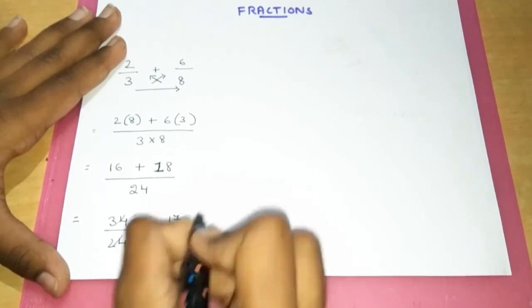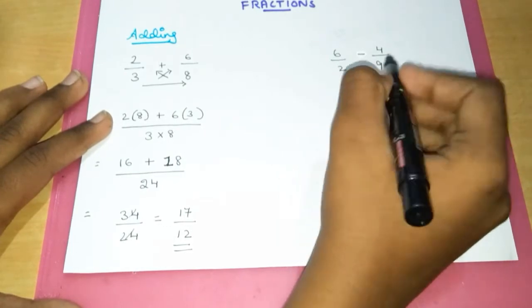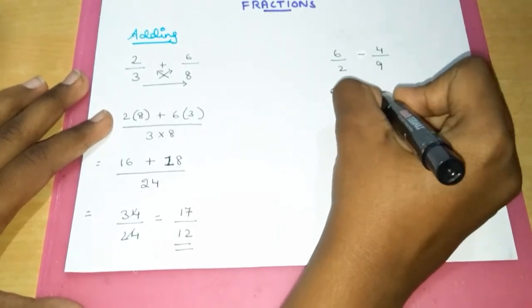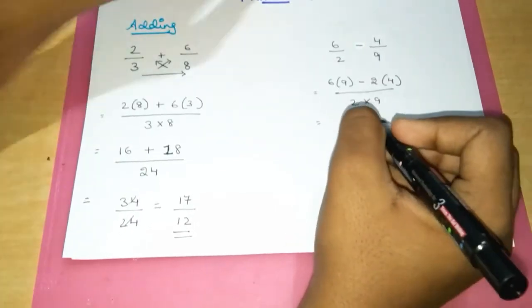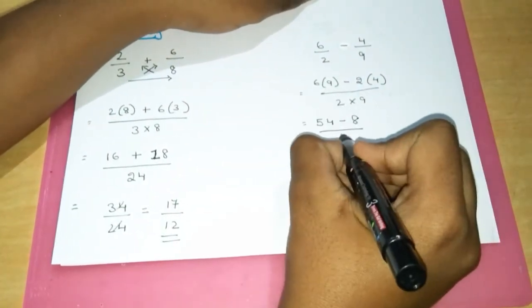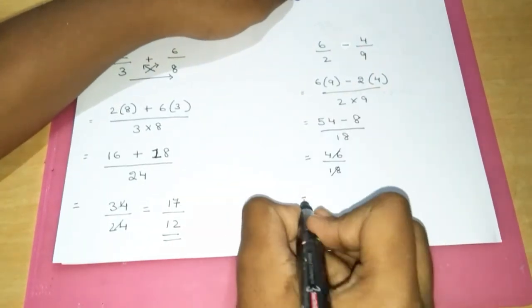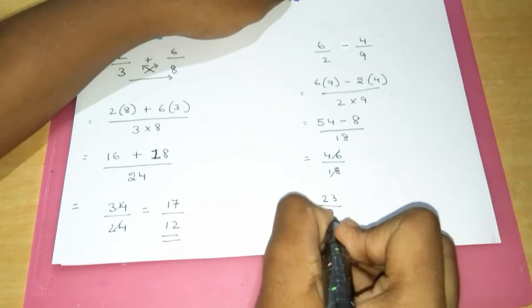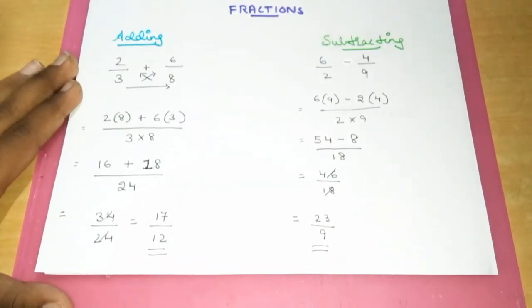We get the answer as 17 by 12. Now let's apply the same formula for subtracting two fractions. The final answer is 23 by 9.